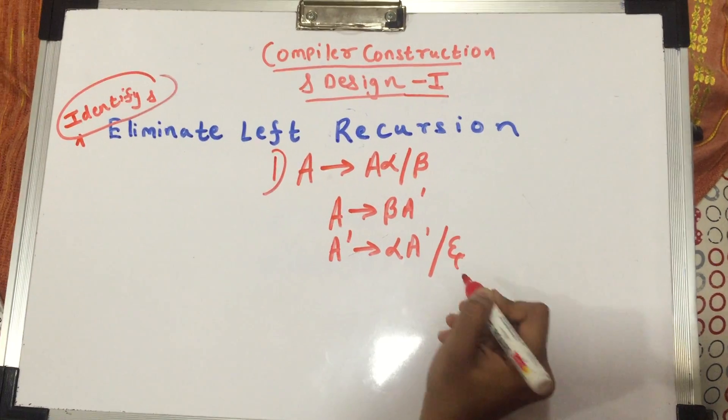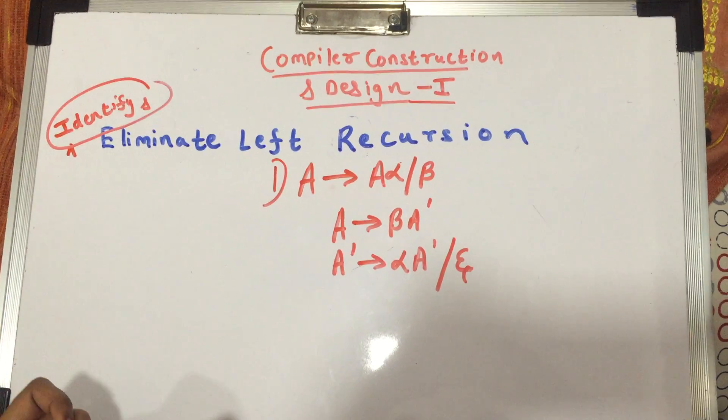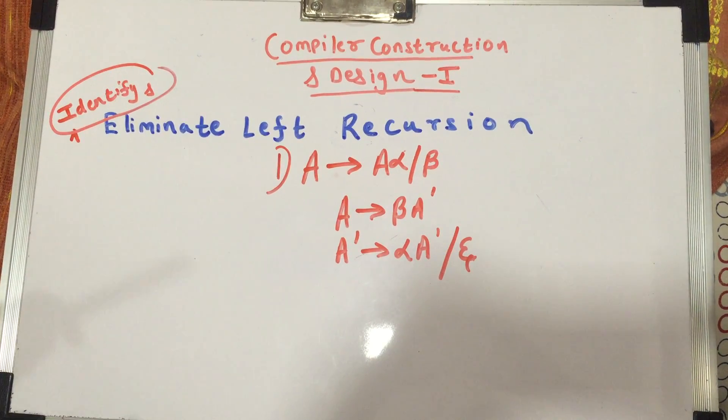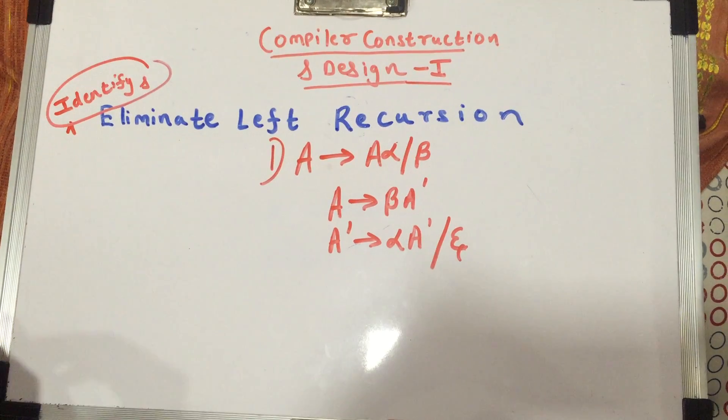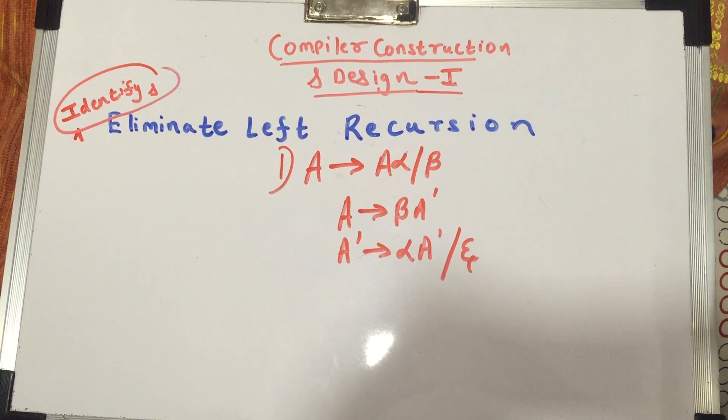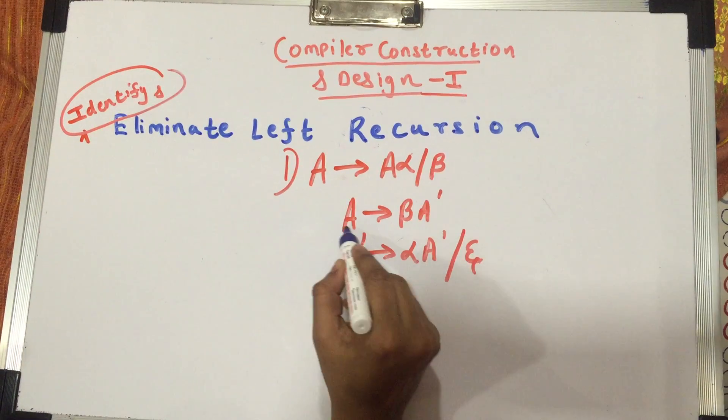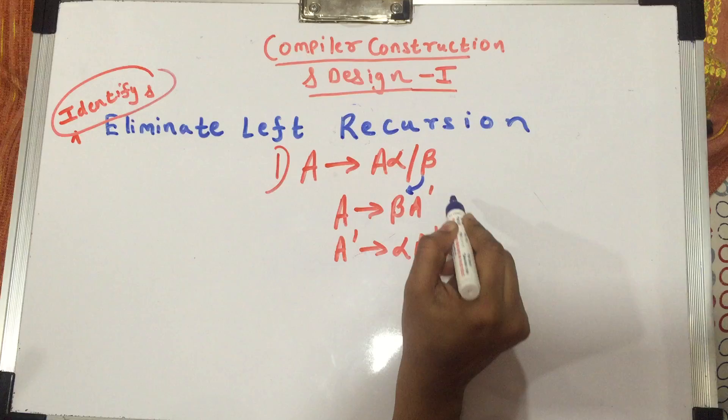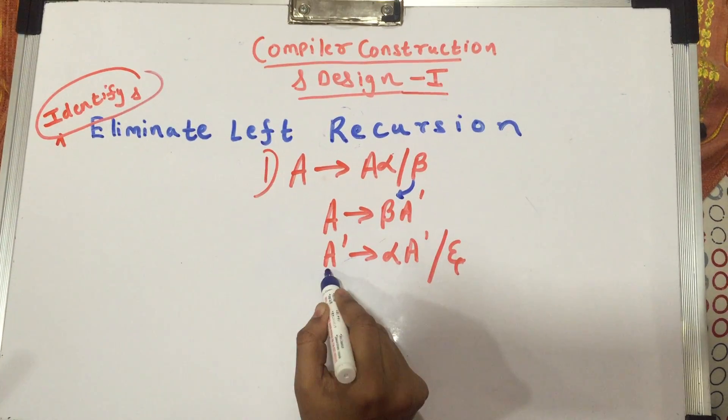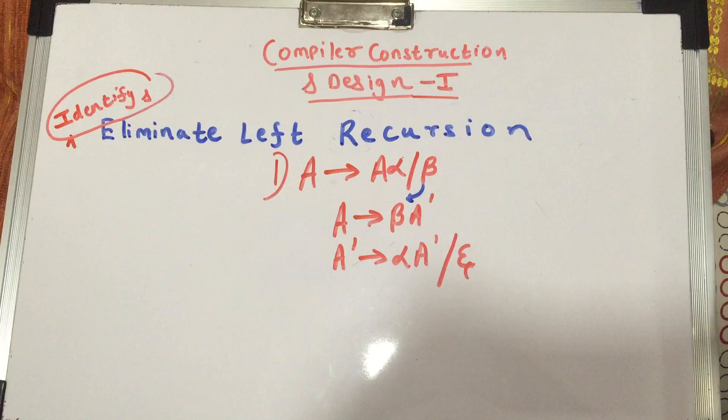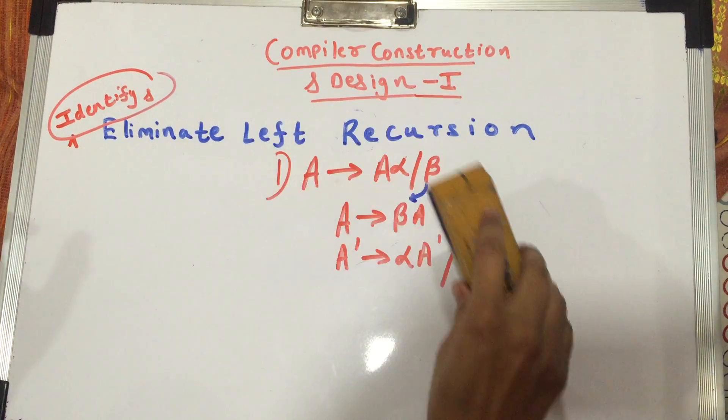So basically this epsilon you add so that the recursion stops. I know this is pretty vague and without examples it would become dry. But for now just remember, to eliminate a left recursion, you have to use this where A gives you beta A dash where beta is this beta. A dash is a new variable which we have introduced and A dash gives you alpha A dash and epsilon. So let us solve a question.